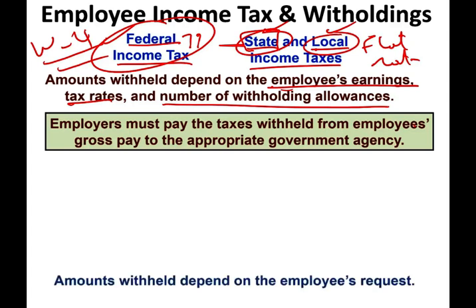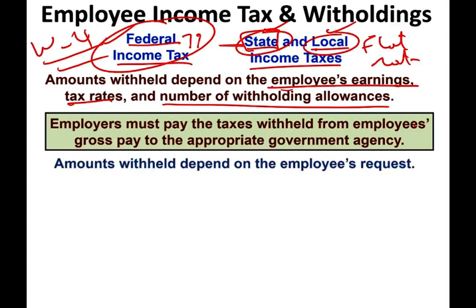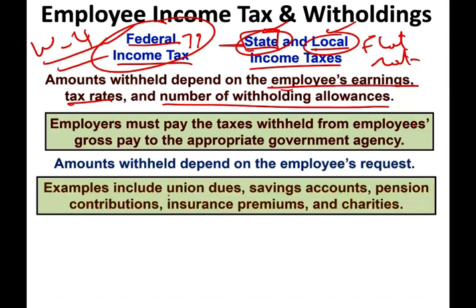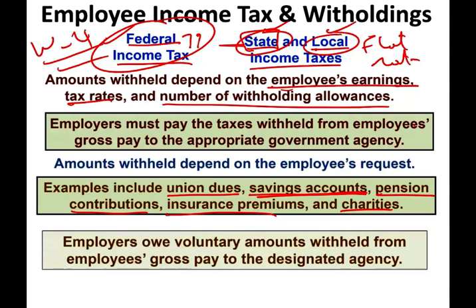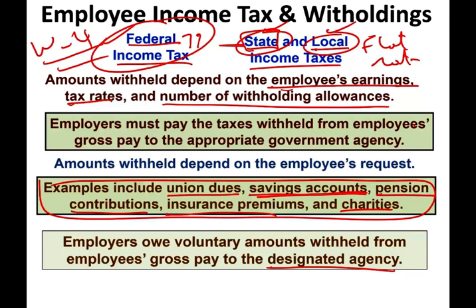Employees can also have voluntary deductions — amounts the employee requests to be withheld. Examples include union dues, contributions to a savings or pension account, insurance premiums, or charitable donations like the Red Cross. The employer withholds those amounts and sends them to the designated agencies: the union, the charity, Blue Cross Blue Shield, a 401(k) administrator, or whoever the employee designates.